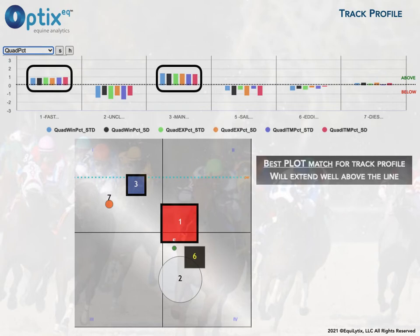Horses one and three — and you can see I have a plot for that race beneath the V-bars so you can get an idea — they're highlighted. Horses one and three have the best plot for that track profile versus the other horses.